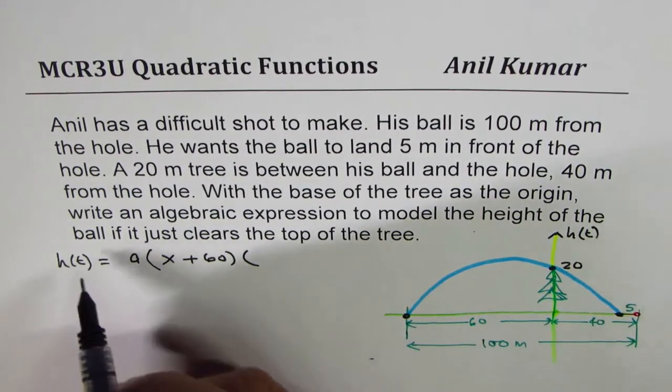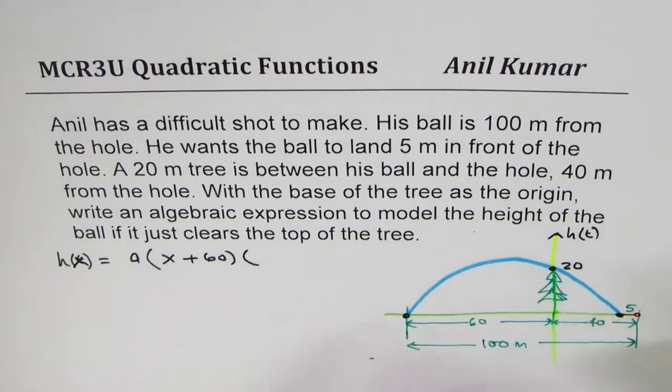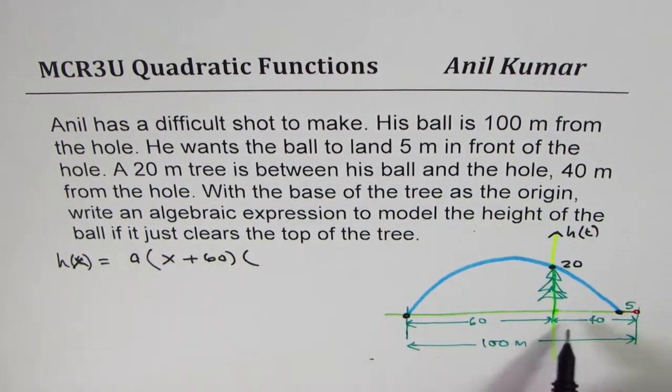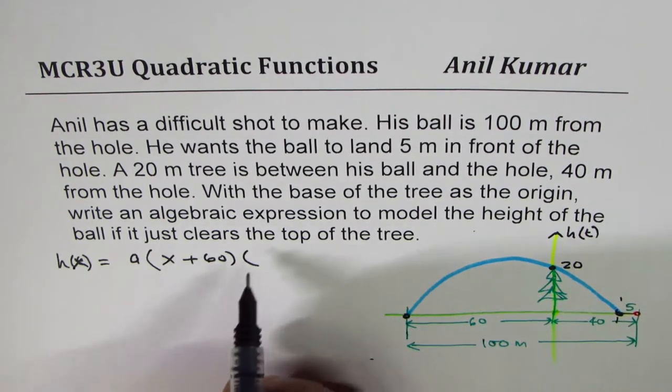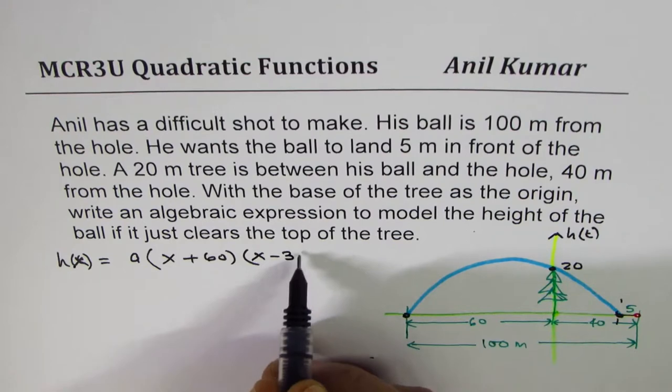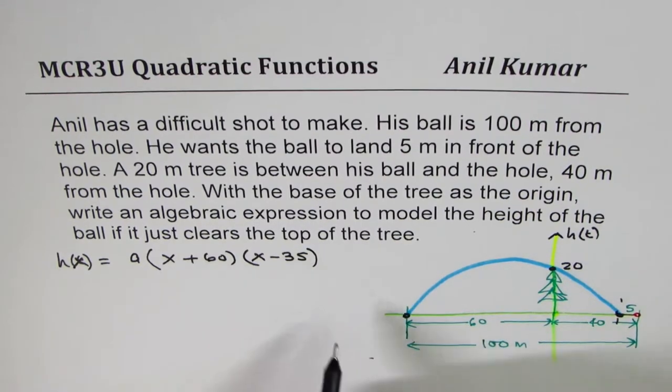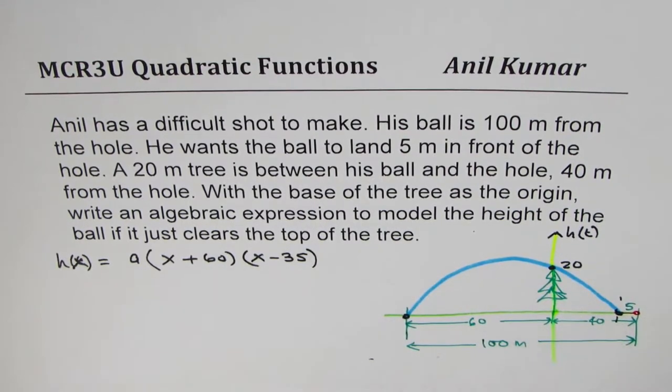The other one here is 5 less than 40. So x minus 35. Do you see that? So that becomes the other x-intercept.